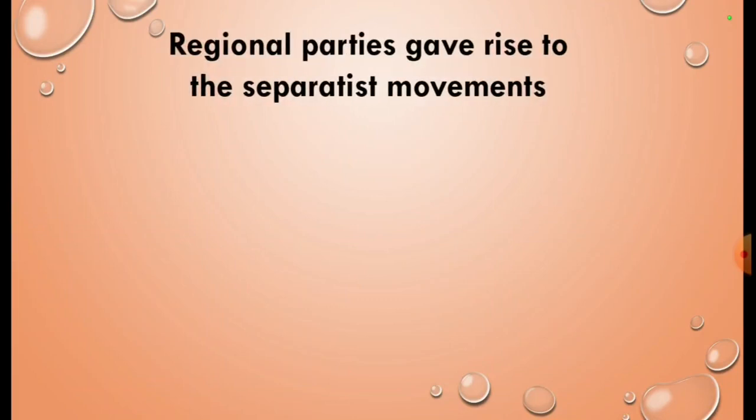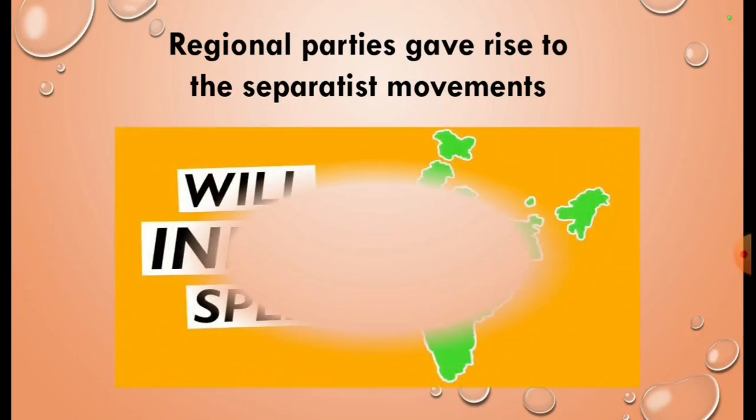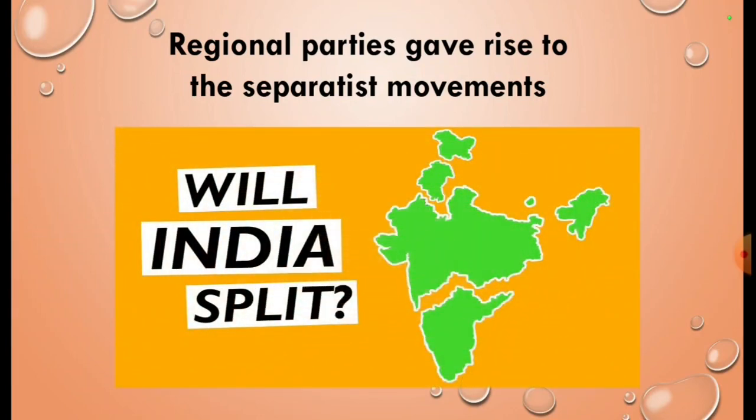Initially, regional identities gave rise to separatist movements. For example, the demands for independent Khalistan and Dravidstan were made with the objective of parting from the Indian Federation and existing as an independent state.